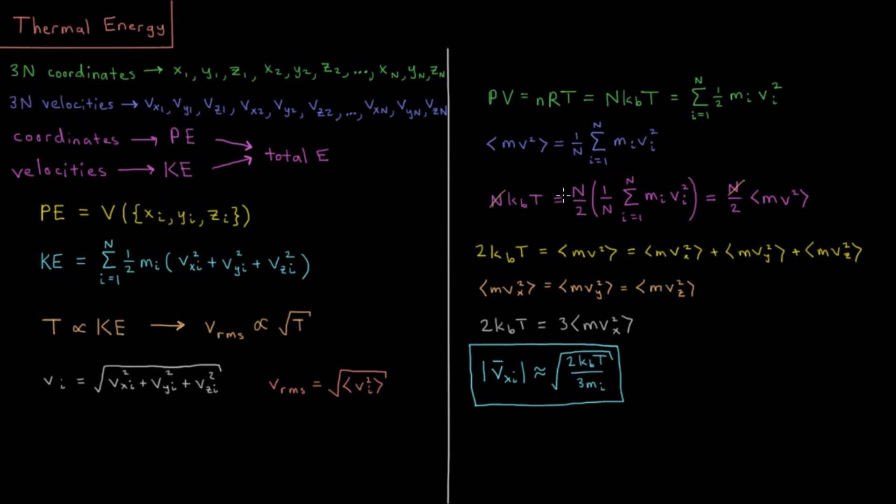So n kt would be n over 2 times 1 over n sum i equals 1 to n m i v i squared. We took the n kt and substituted it in, we take the one half out there and then multiply by n over n. We have one half, then n over n sum m i velocity i squared. So the n's on the outside cancel and this value in parentheses is what we've defined as the average mass times velocity squared. So multiply both sides by 2. So we have 2 kt equals the average value of mass times velocity squared.